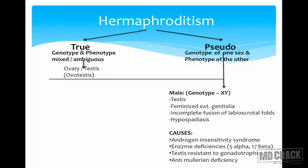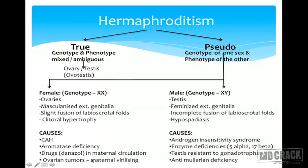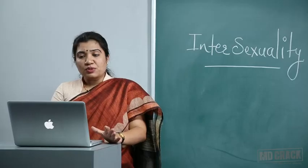In female pseudo-hermaphrodite, the genotype is XX with ovaries present, but external genitalia are masculinized — fusion of labioscrotal fold and clitoromegaly making it look like male external genitalia. The commonest cause is congenital adrenal hyperplasia (CAH), which can be congenital or late-onset (adrenogenital syndrome). Other causes include aromatase deficiency, virilizing drugs affecting the fetus, or androgen-secreting ovarian tumors causing ambiguous genitalia in the female fetus.